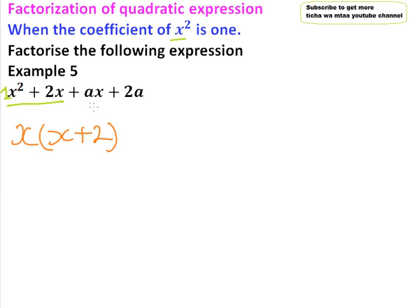Here we factor out a, so we have plus a, and then we will be left with x plus 2. Cross the bracket.